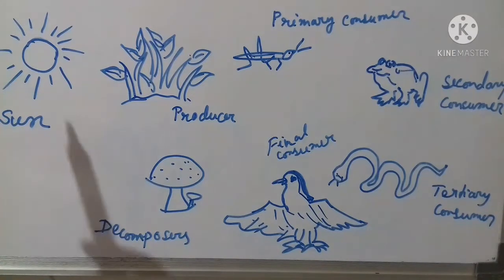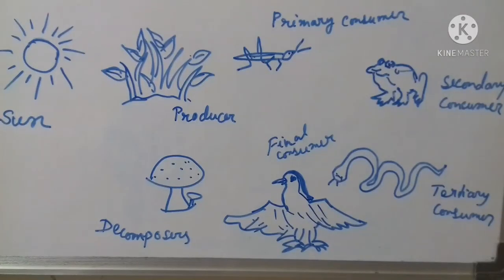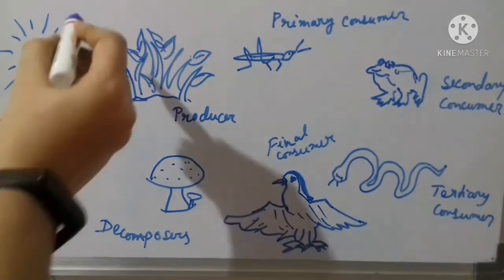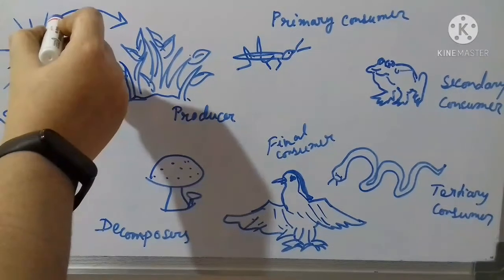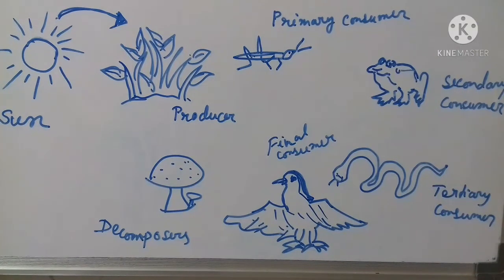The sun is the ultimate source of energy on earth. It provides the energy required for all plant life. The plant utilizes this energy for the process of photosynthesis, which is used to synthesize their food. In its green leaf, the plant makes its own food by taking sunlight, water and carbon dioxide. The energy from sunlight is stored in the form of glucose or starch in the body of the green plant.